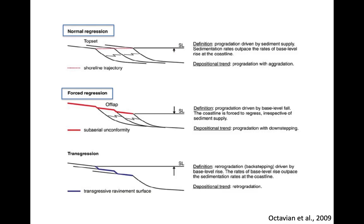A normal regression is when there's more sediment supply outpacing base level rise — we're pouring more sediment into the basin than the water level is rising. Imagine taking a jar, filling it half with marbles and half water, then dumping more marbles in: the water level isn't really changing, we're just making less room for it. That's a normal regression — more sediment coming in than the water level is rising.